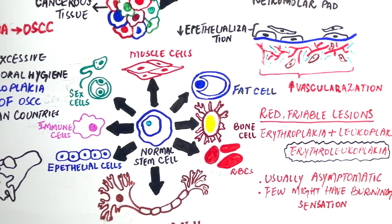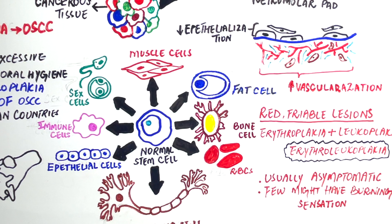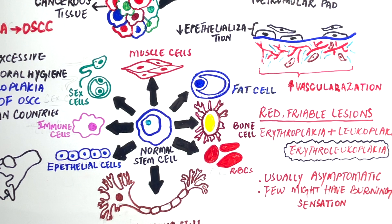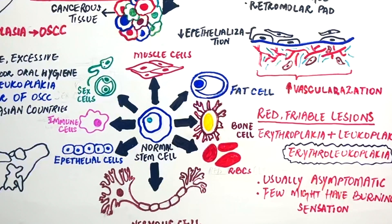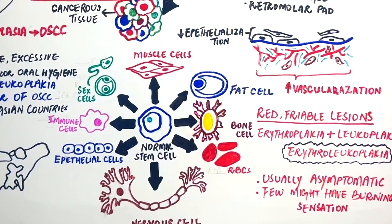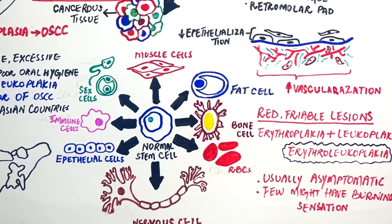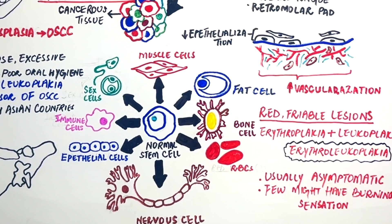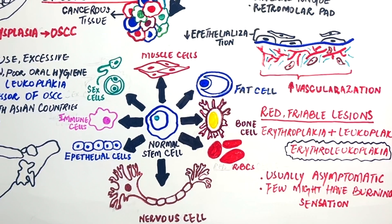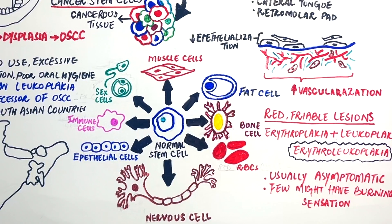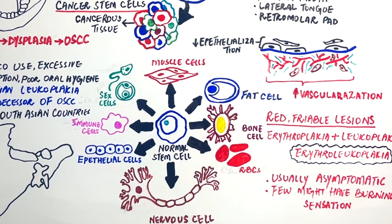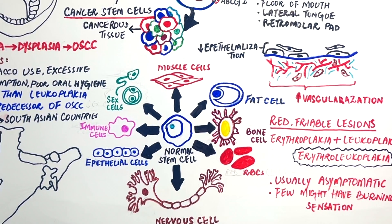Same as leukoplakia, the diagnosis of erythroplachia also involves a diagnostic biopsy, confirming abnormal atrophic epithelial cells lacking keratin production. Treatment strategies vary based on severity and underlying causes, often beginning with addressing risk factors like smoking cessation or alcohol reduction.